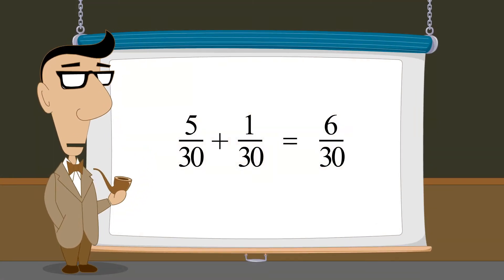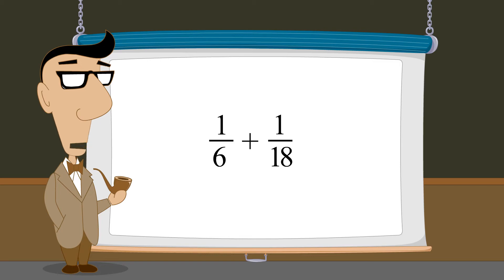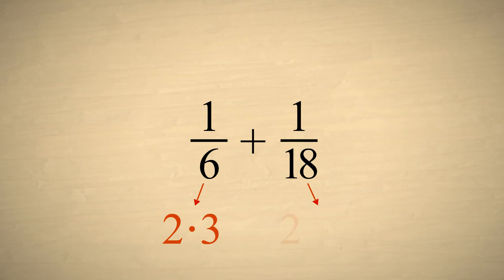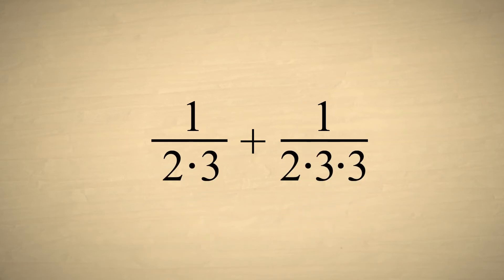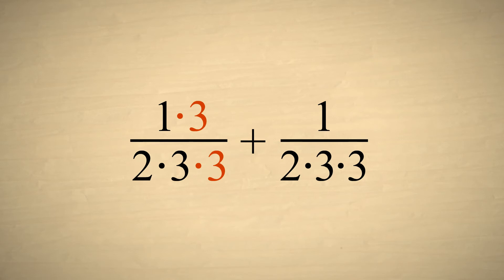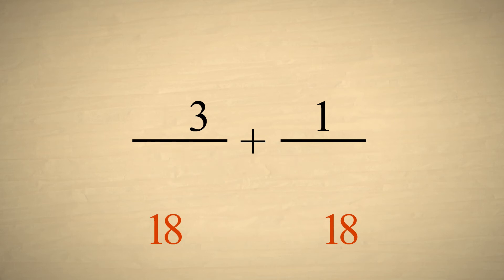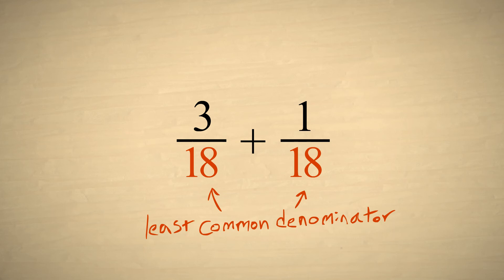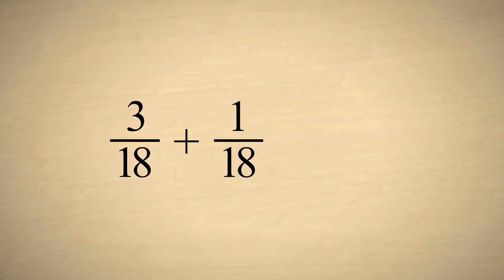As another example, let's say that we wish to add one-sixth plus one-eighteenth. We first factor each denominator. The first denominator has only one factor of three, while the second denominator has two. We can make the two denominators the same by multiplying the top and bottom of the first fraction by three. The two fractions will then have a common denominator of eighteen, which is their least common denominator, and we can now add their numerators.